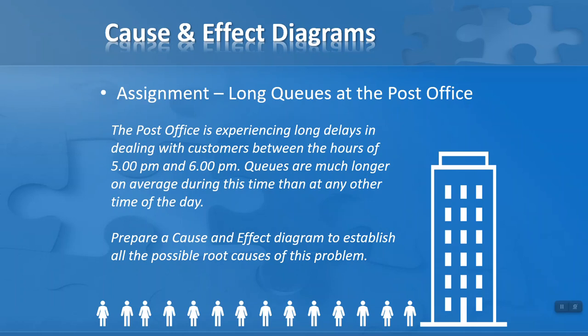Queues are much longer on average during this time than at any other time of day. I'm sure you can imagine queues forming in the post office. So we want to figure out why is this happening. The problem, the effect, is the long queues. What is causing that? There could be many different main causes and primary and secondary root causes after that. Your task would be to prepare a cause and effect diagram to establish all of the possible root causes of this problem.